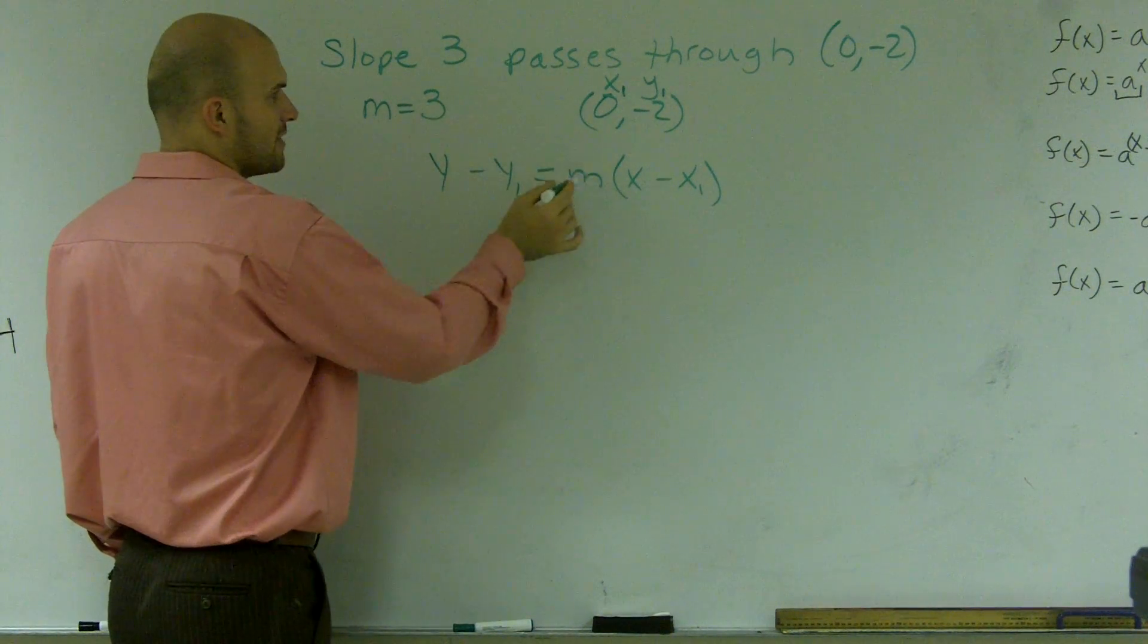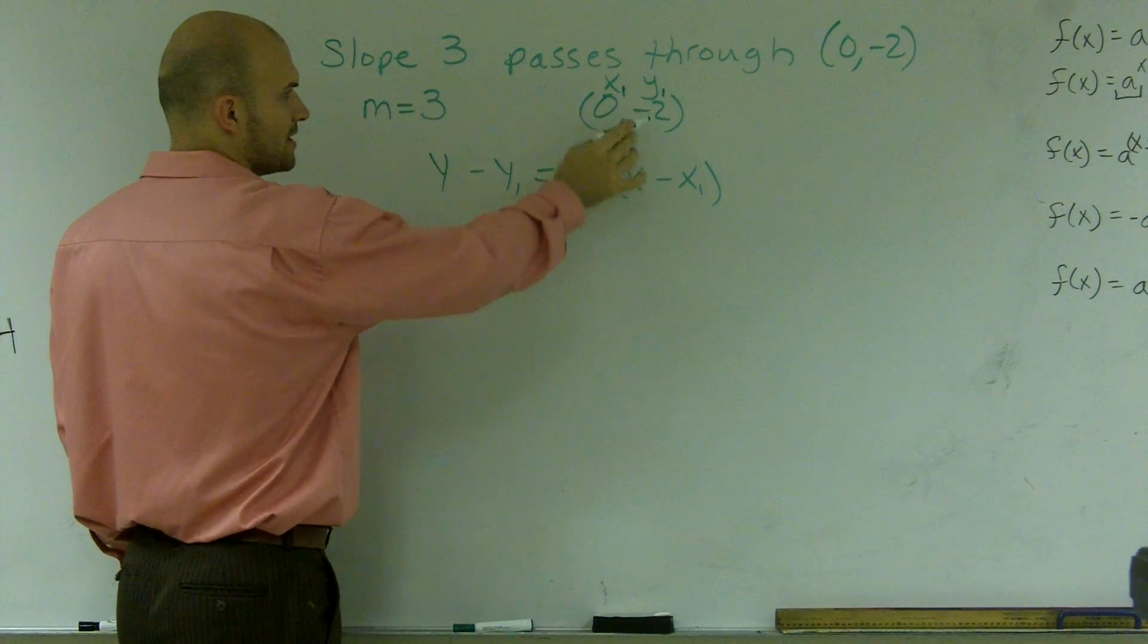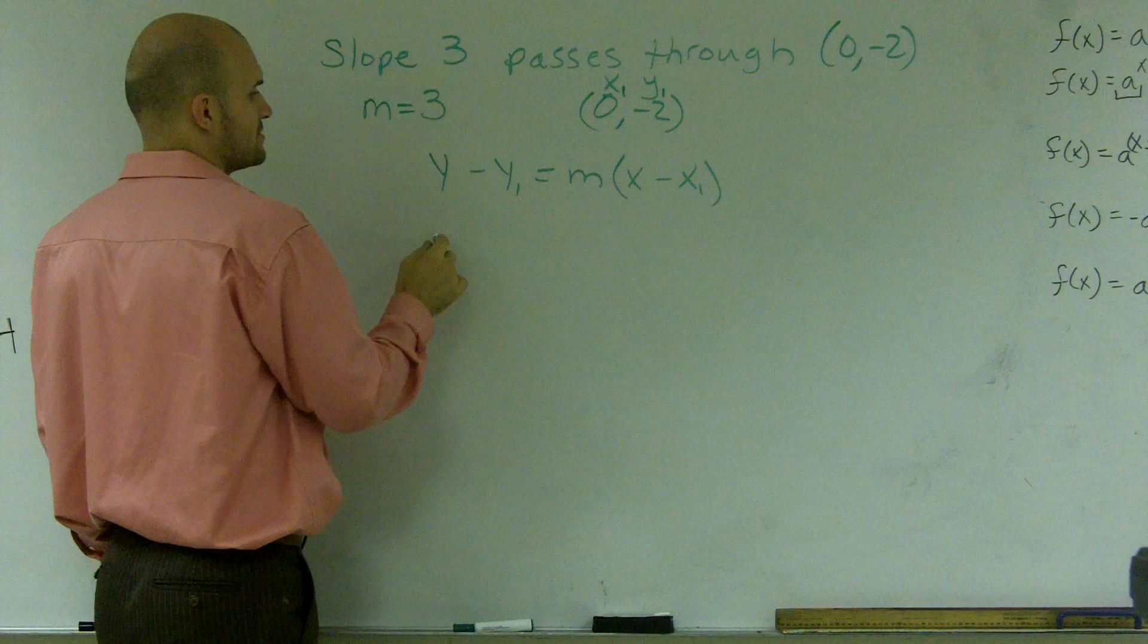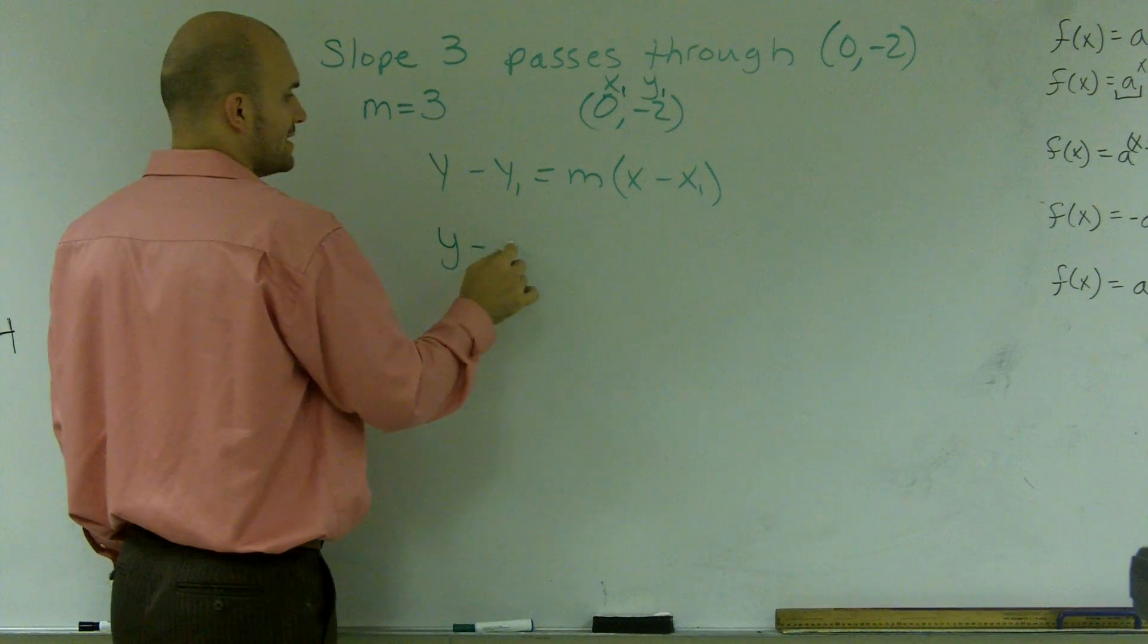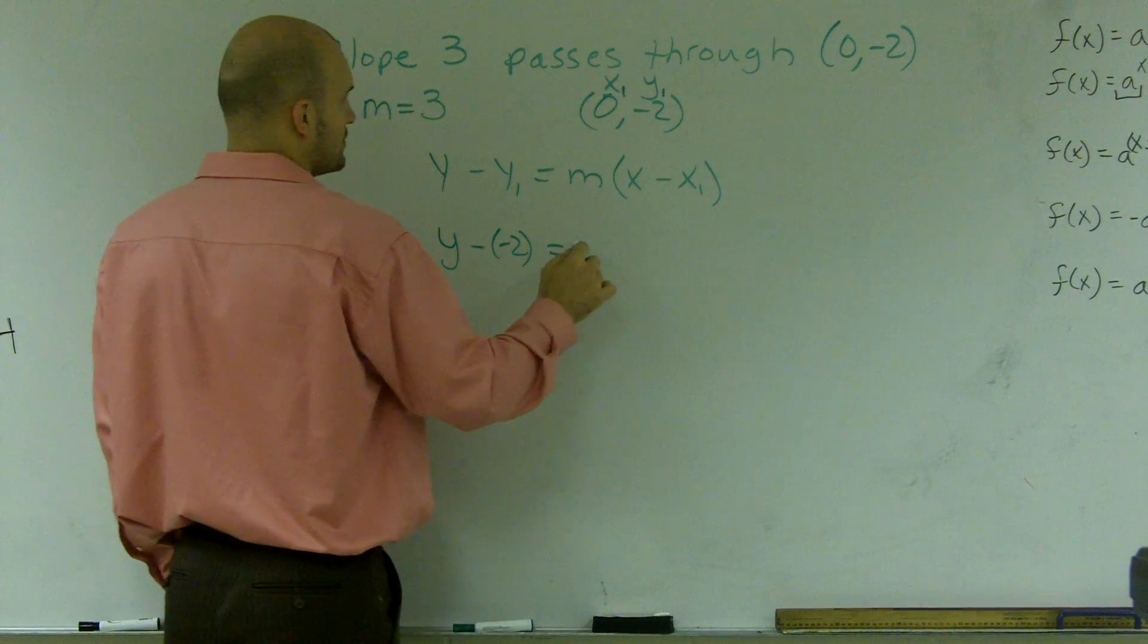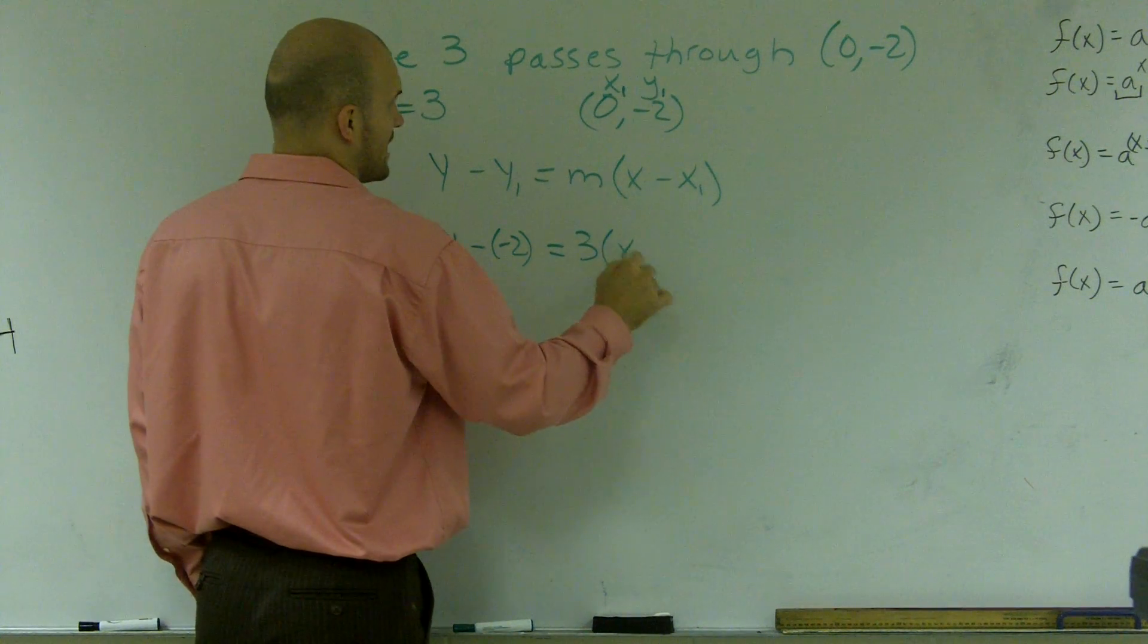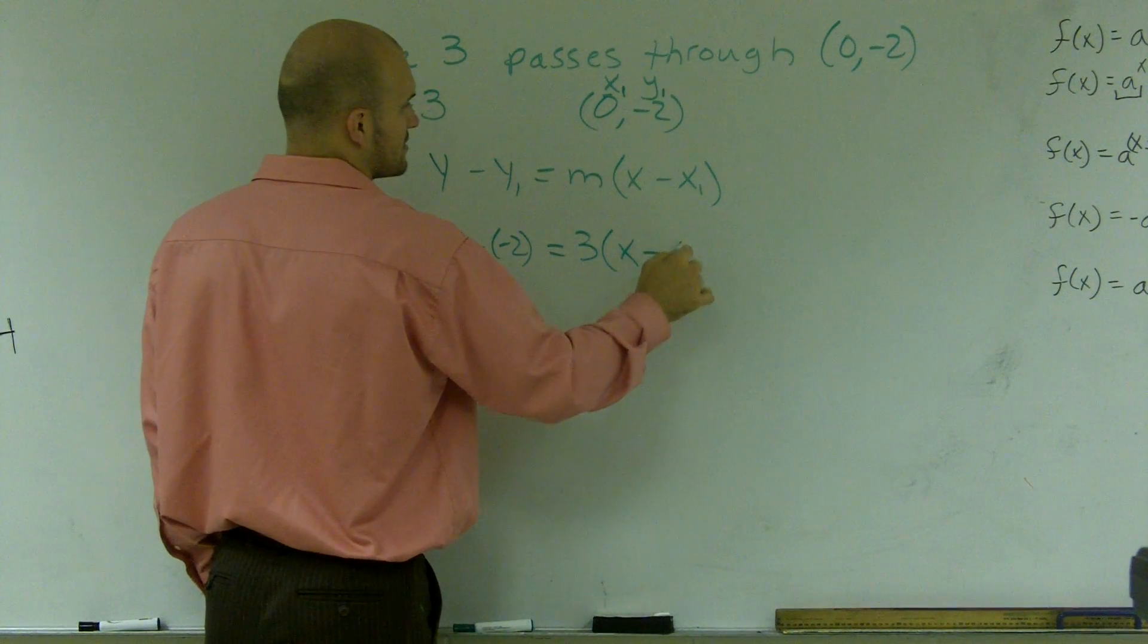So then what I'll do is I'll plug a 3 in for m, a 0 in for x1, and a negative 2 in for y1. So what I get is y minus a negative 2 equals 3 times x minus 0.